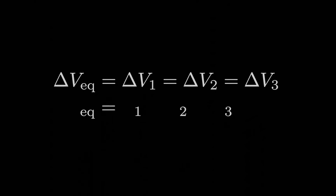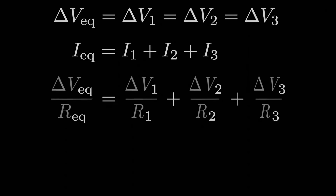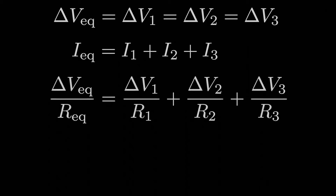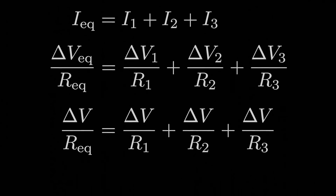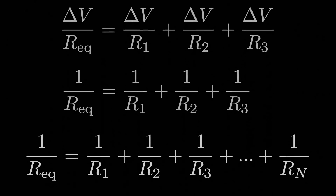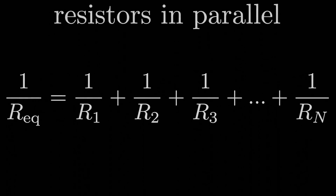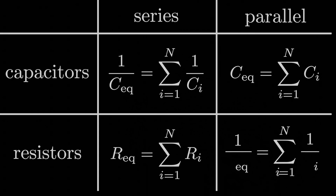The current through the equivalent resistor is the sum of the currents through each of the resistors in parallel. For each resistor, the current is the voltage drop across it divided by its resistance. Since the voltage drops across each resistor are the same — call them all delta V — dividing by that voltage drop gives us our expression. In the case of parallel resistances, the inverse of the equivalent resistance equals the algebraic sum of the inverses of each resistance in parallel. This is topsy-turvy compared to capacitors: capacitors in series are expressed by inverse capacitances, and here resistors in parallel follow a similar relationship.